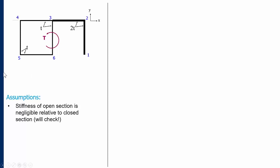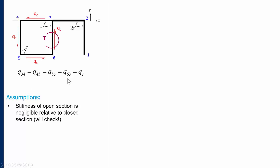Although this problem is technically statically indeterminate, we can neglect the stiffness of the open section as a first step and assume all the torsion is carried by the square closed section. We'll check that this assumption is valid at the end. Because we are neglecting the contribution of the open section, only the closed section reacts to the torque, and torque creates a constant shear flow in a closed section: q34, q45, q56, and q63 are all constant, which we call qc.